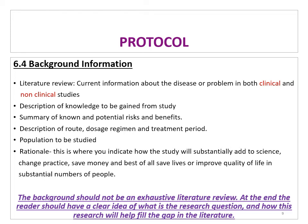Usually, when writing the literature review, you think of it as a funnel shape. At the beginning, you must be broad and generalizable, and then as the funnel narrows, you become more specific about the disease, the treatment, and the population — until at the end you indicate the rationale for conducting this type of trial in this specific population.